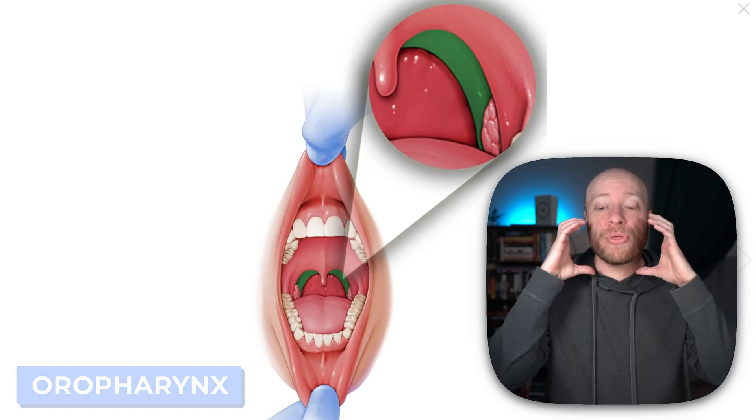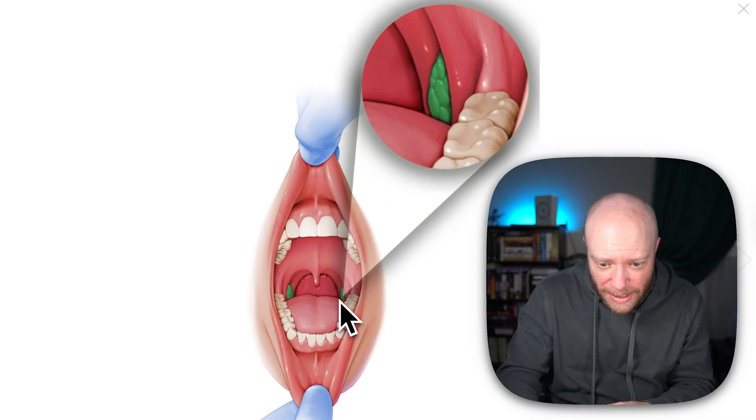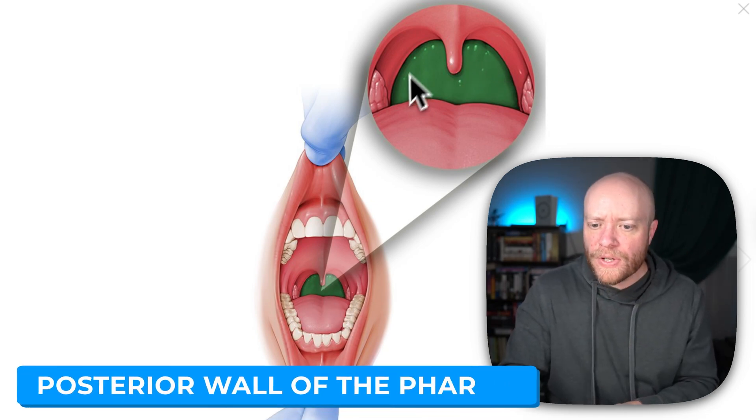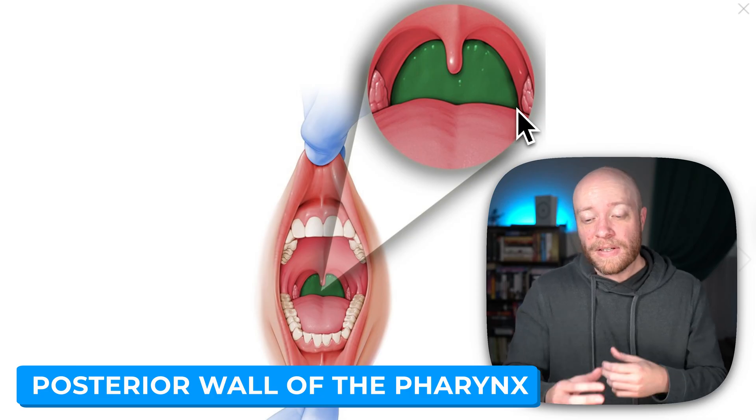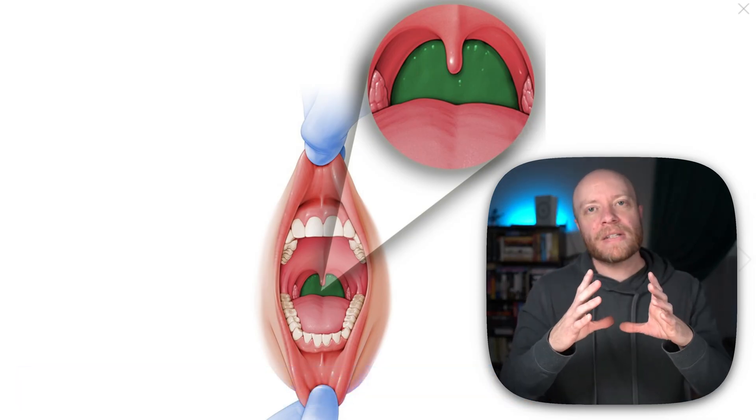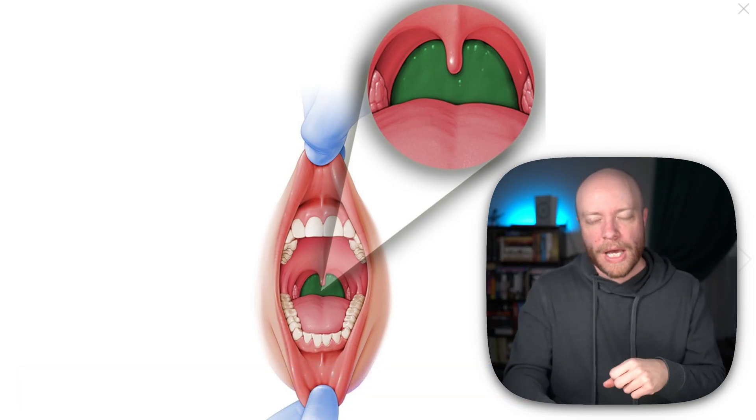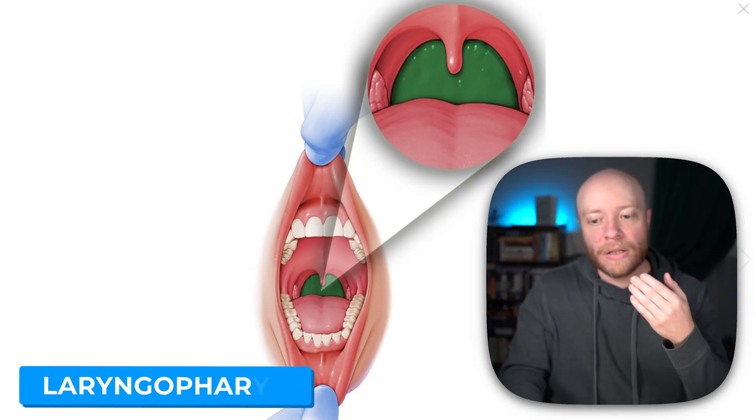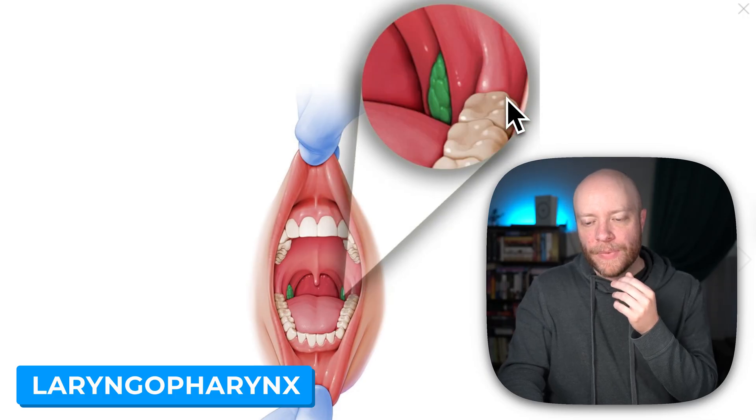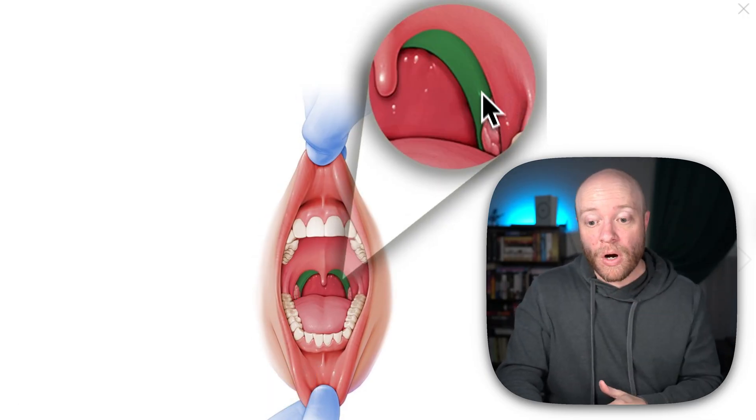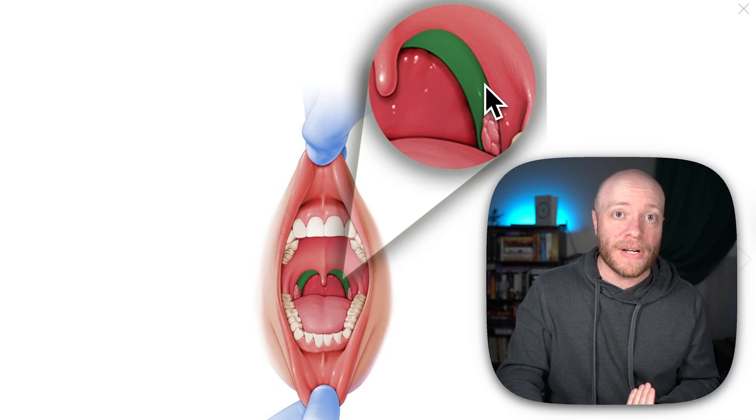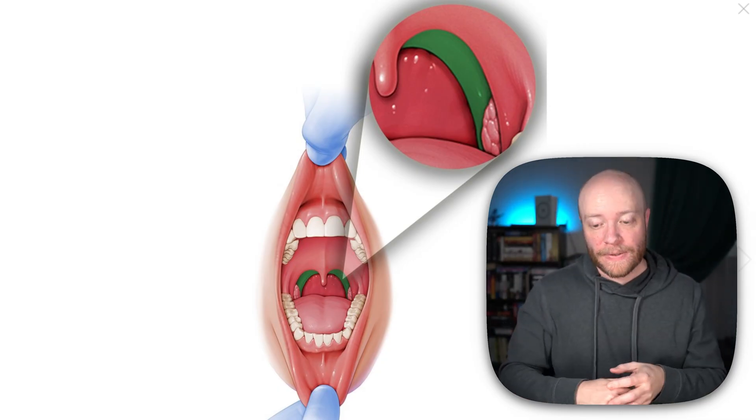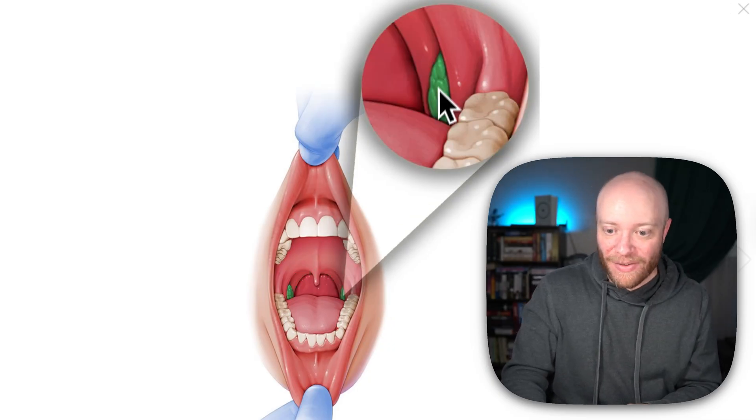Remember the pharynx is your throat, so everything you can see back here. You can see right here, this is called the posterior wall of the pharynx. This is literally the back of your throat. Pharynx means throat, but we can divide the pharynx into three different sections - the naso, oro, and laryngopharynx. If we go back to that palatopharyngeal arch, this is the beginning of the pharynx. We are now entering into that oropharynx.